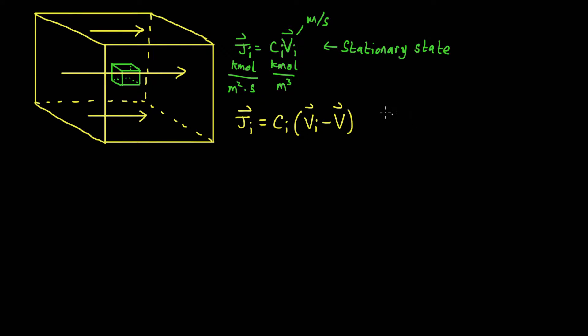This is in terms of molar density, but we can do the same for mass density as well. So this is the mass density multiplied by the mass velocity — using a small v here — minus the mass velocity of the system. So we can calculate the diffusive flux even if there is some net velocity to the molecules in the system, as long as we know what that velocity is.